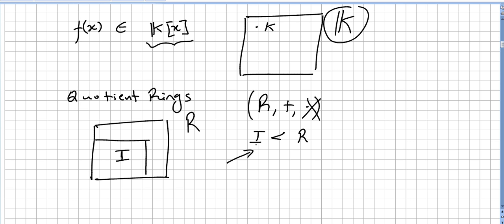This subgroup I will necessarily be normal, so the left cosets will be equal to the right cosets. So I as a subgroup will be normal so that the quotient group R/I can be defined.